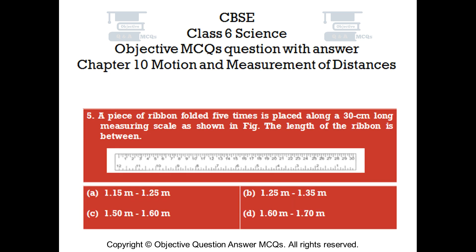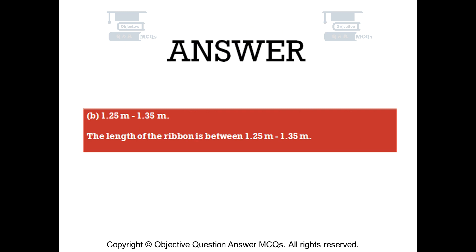Question number 5. A piece of ribbon folded 5 times is placed along a 30 centimetre long measuring scale as shown in the figure. The length of the ribbon is between: Option A, 1.15 metre to 1.25 metre; Option B, 1.25 metre to 1.35 metre; Option C, 1.50 metre to 1.60 metre; Option D, 1.60 metre to 1.70 metre. The right answer is Option B. The length of the ribbon is between 1.25 metre to 1.35 metre.